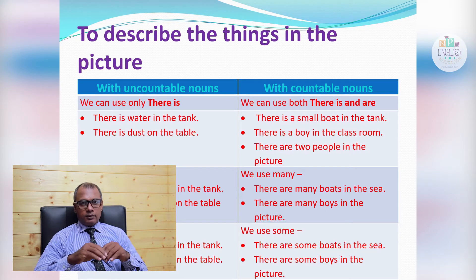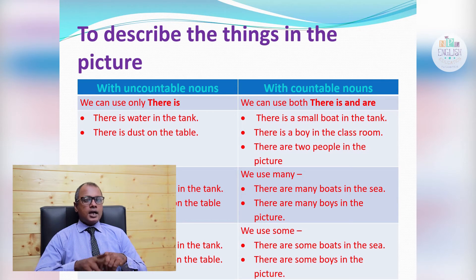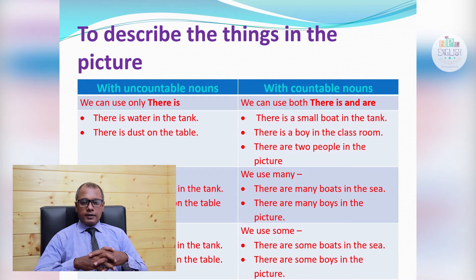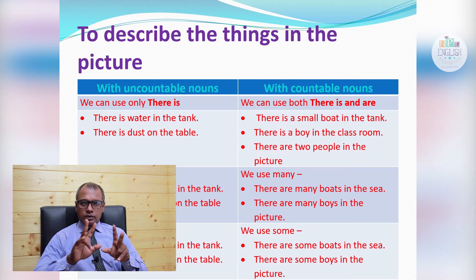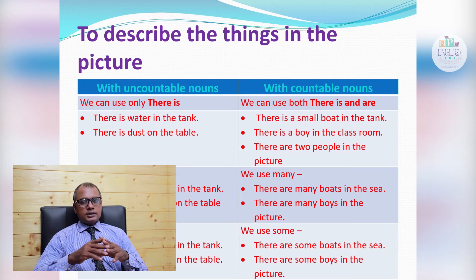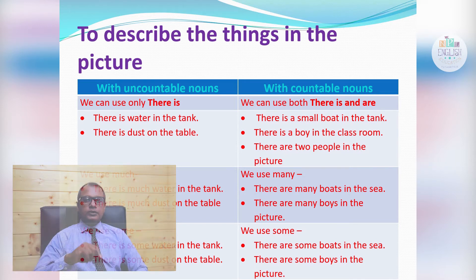With countable nouns, we use 'there are'. With uncountable nouns, we only use 'there is'. For example: 'There is water in the tank' — water is uncountable. 'There is dust on the table' — dust is uncountable. But we use both 'there is' and 'there are' with countable nouns: 'There is a small boat in the tank', 'There is a boy in the classroom', 'There are two people in the picture.'